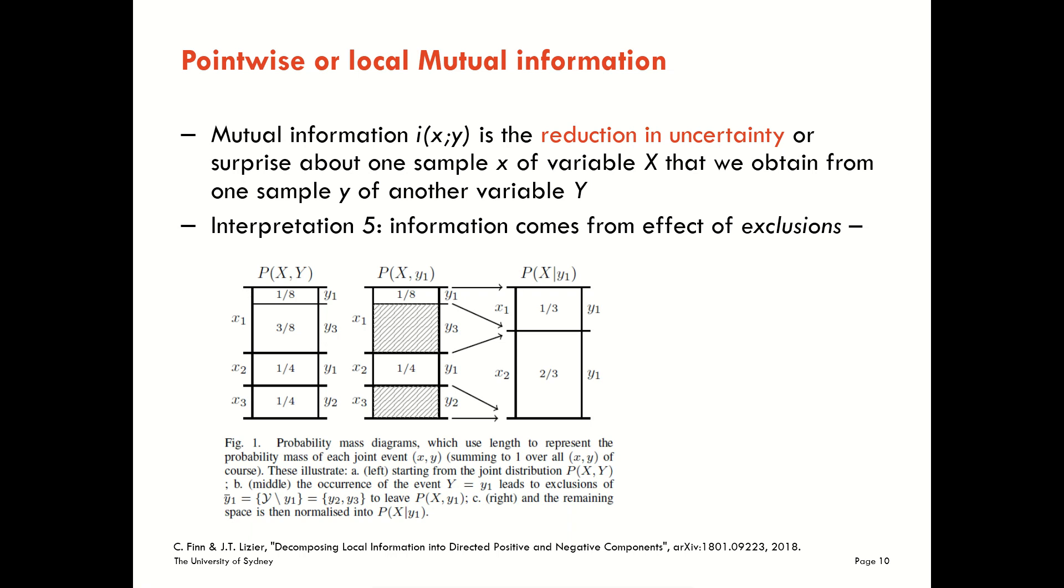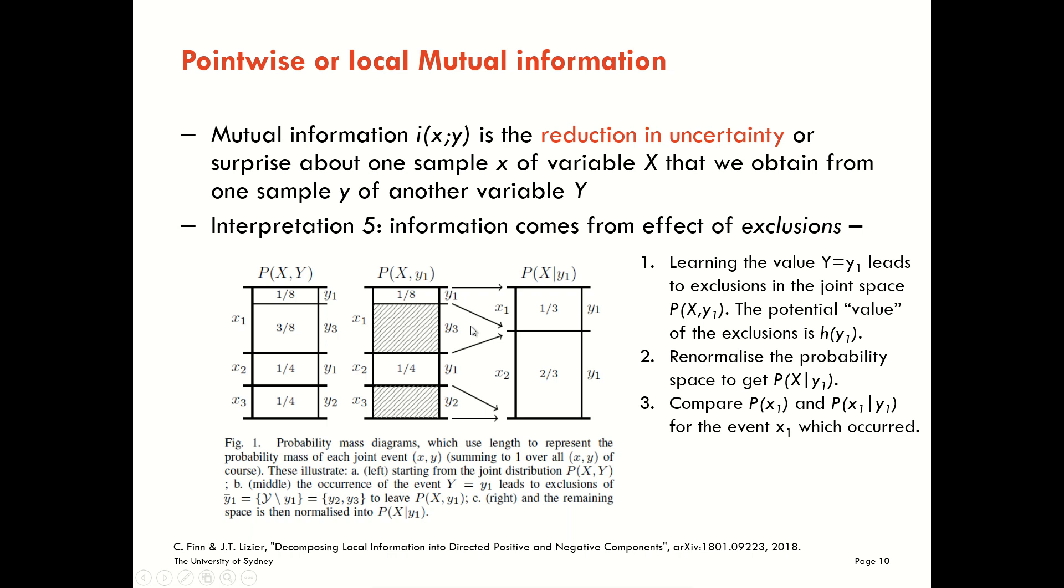Let's think about what information we get from a realization Y about a realization X. Let's consider a situation where we have realization Y1, and let's say it's realization X1 that occurs in this situation as well. What happens when we read off our realization Y1? Well, basically that tells us that other realizations of Y cannot occur here. So we can look at the other realizations of Y, Y3 and Y2 in this example, and we can exclude them from the probability mass space, which we've done with the hashing here.